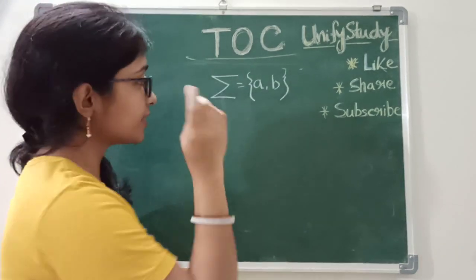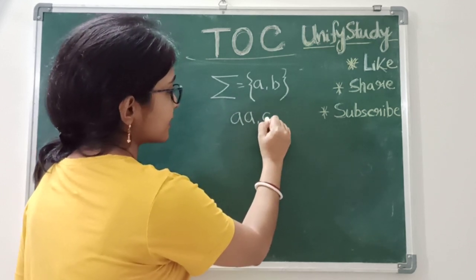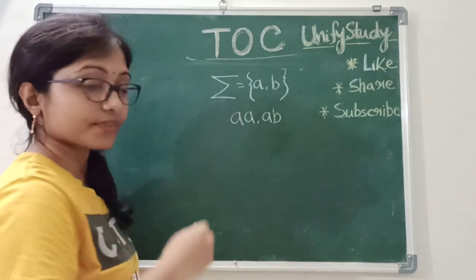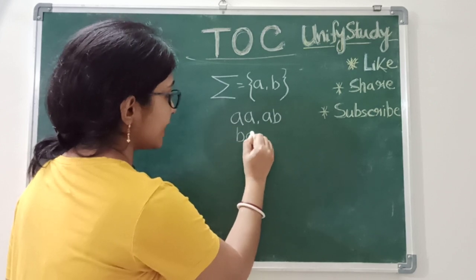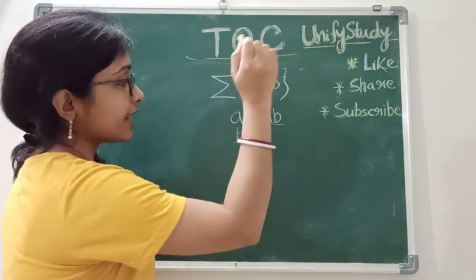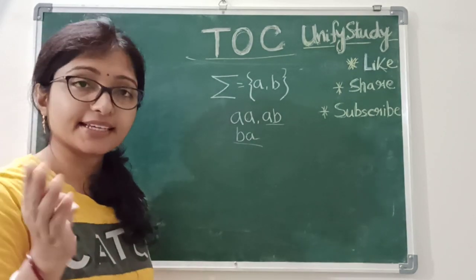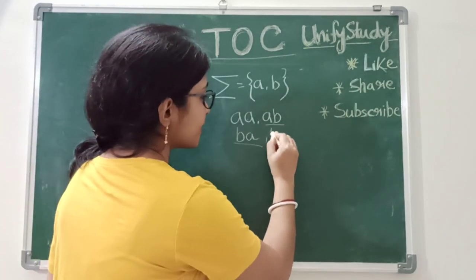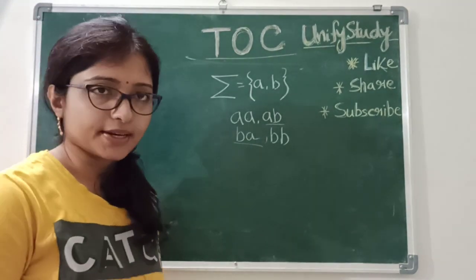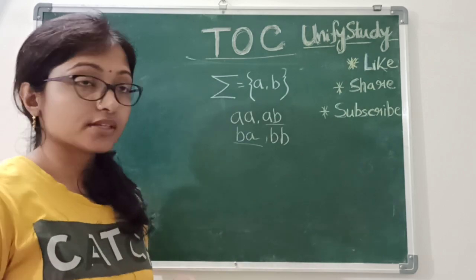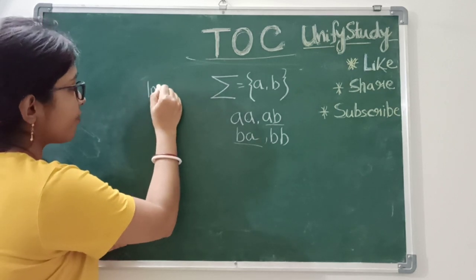How can you make a two-letter word? I can make AA, and another I can make is AB. Any other? Yes, BA is also possible because AB and BA are not the same. Any other two-letter word? Yes, another one is possible: BB. Is there anything else remaining? I hope nothing is remaining. So these are the words with the input alphabet A and B — this is called the input alphabet.